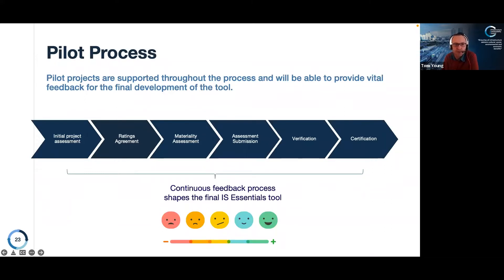The initial project assessment is really key with IS Essentials — it's an opportunity to contact us, have a chat, and find out if Essentials is appropriate for you. The rating agreement is very similar to a full rating. Then a materiality assessment, which is really key within the IS Essentials pilot because it screens credits in and out. The assessment submission still needs an ISAP who pulls the information together and submits — you'll have the IS project manager working with you throughout.